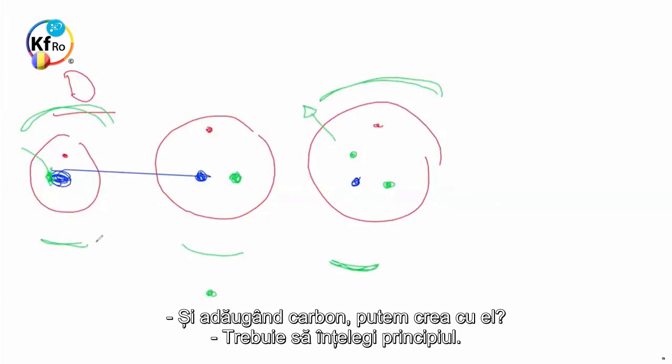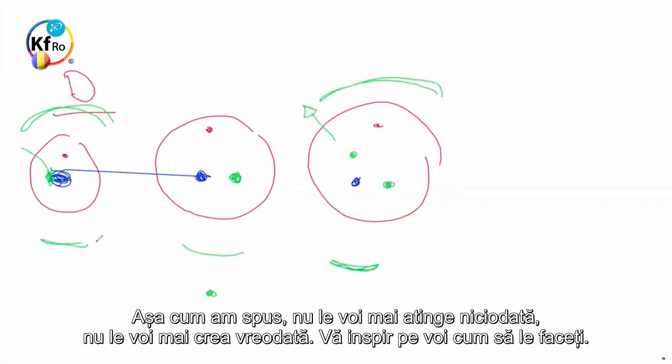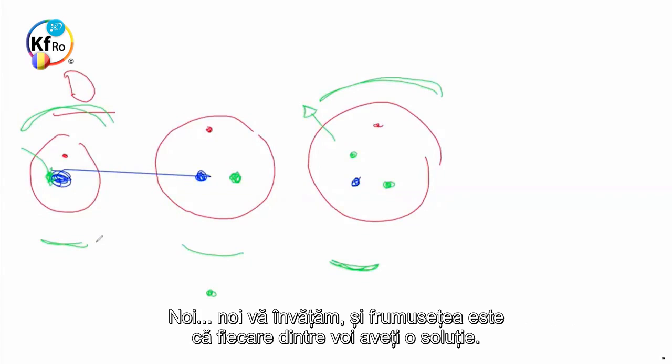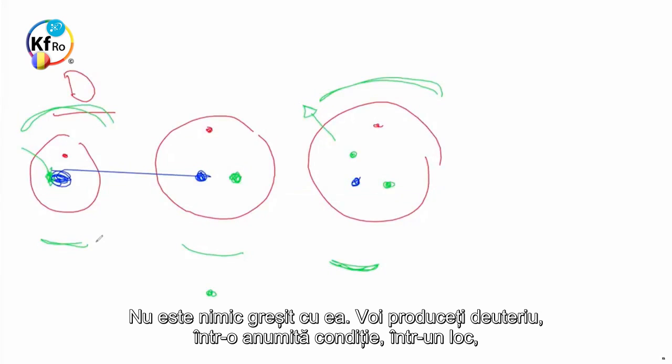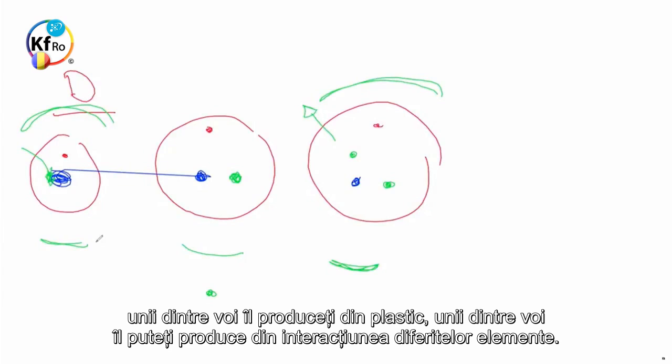And by adding Carbon, we're able to create with it? You have to understand the principle. I'm a nuclear physicist. I know exactly how to create both. As I said, I'll never touch, I will not make anymore. I inspire for you to make. You have to understand it. Somebody asked me, there was a question, Caroline said, can you explain to people? We teach and the beauty of it is each one of us will have a solution. There's nothing wrong with it. You produce Deuterium in a condition in somewhere else. Some of you can produce it from very easily from Aluminium. Some of you produce it from Plastic. Some of you can produce it for interaction of different elements.